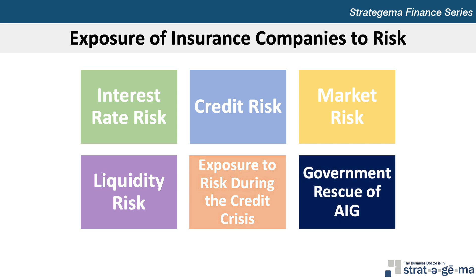Before the credit crisis, American International Group, AIG, was the largest insurance company in the world. The company had sold credit default swaps that were intended to cover approximately $440 billion in debt securities against default. However, as many of those debt securities represented subprime mortgages, in 2008, AIG experienced severe financial problems when many of those mortgage-backed securities defaulted, and ultimately this culminated in the Federal Reserve bailing AIG out in September 2008.